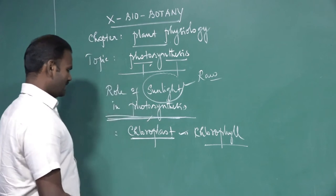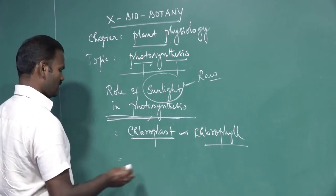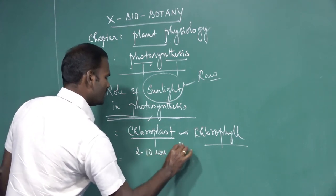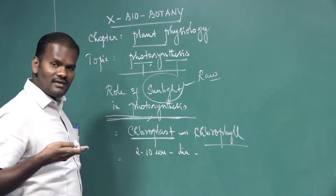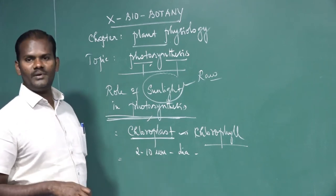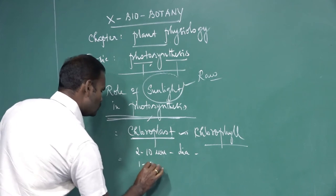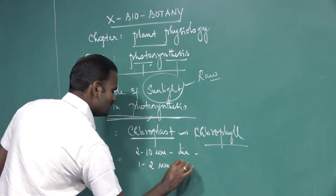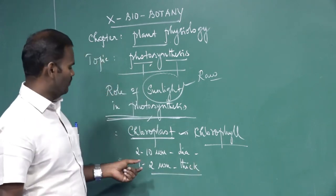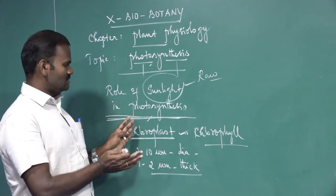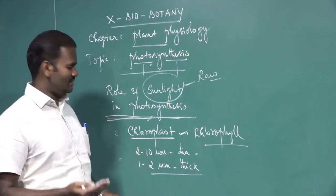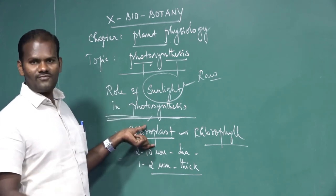Generally, a chloroplast can be measured at 2 to 10 micrometers in diameter, and 1 to 2 micrometers in thickness. It is present only in plant cells. The entire process of photosynthesis includes two groups: one is the light reaction and the other is the dark reaction. Before discussing light reaction and dark reaction, it is essential to know the structure of the chloroplast. The chloroplast is generally a wavelength or disc shape-like structure.